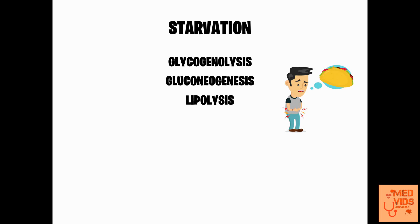When glycogenolysis and gluconeogenesis are exhausted, the body moves to lipolysis — the breakdown of triacylglycerol stored in adipose tissue to release free fatty acids. There will be excess production of ketone bodies leading to metabolic acidosis, and if this acidosis is not corrected and starvation continues, it can lead to death. So the starvation sequence is: glycogenolysis → gluconeogenesis → lipolysis → acidosis → death if uncorrected.